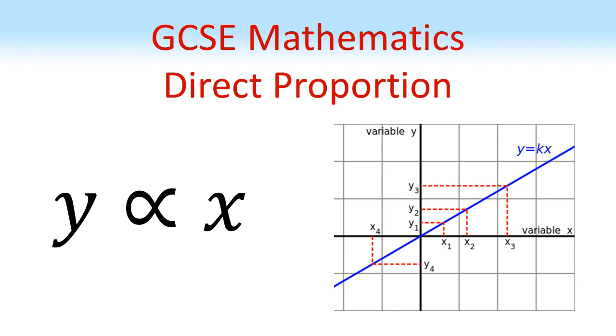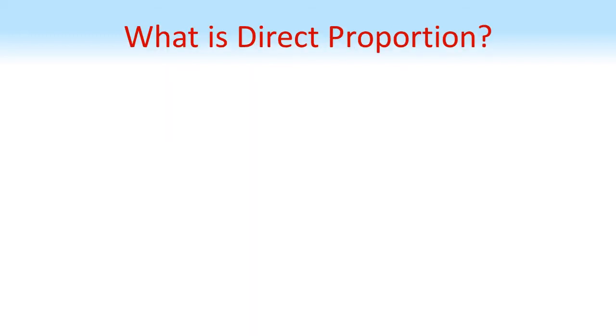GCSE Mathematics Direct Proportion. So firstly, what is direct proportion? If you have two quantities, they are directly proportional to each other if they are always in the same ratio.